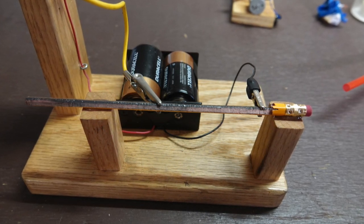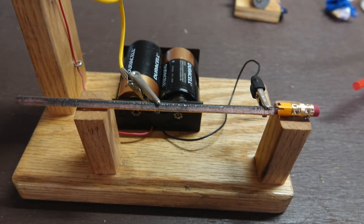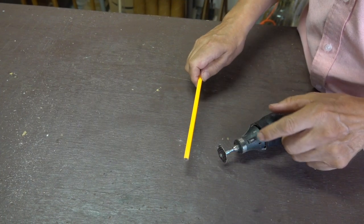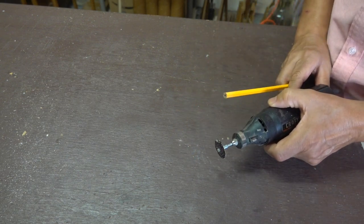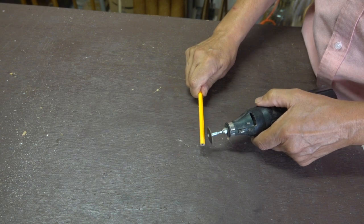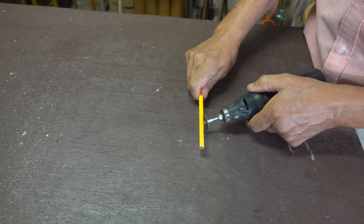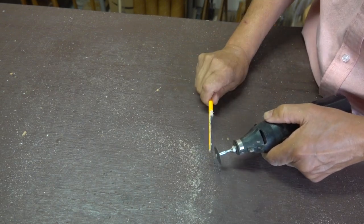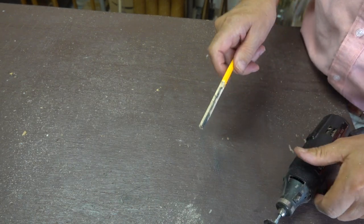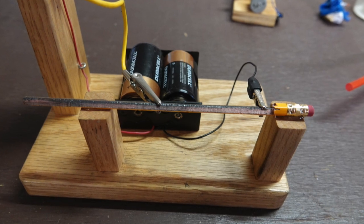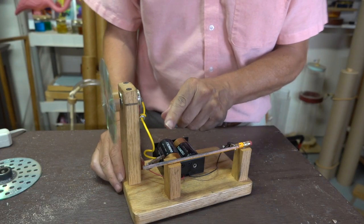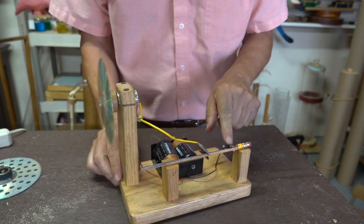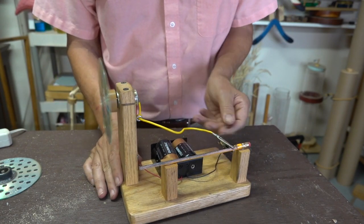The lead in the pencil is actually a mixture of graphite and clay. It actually makes a pretty good variable resistor so we're going to use that as a speed control. Now to expose that graphite I'll simply sand the wood down with this rotary tool. When it's finished the pencil is simply glued onto the two supports. Now to vary the speed I simply move the alligator clip along the length of the pencil and as it gets closer to the other one the motor speeds up.